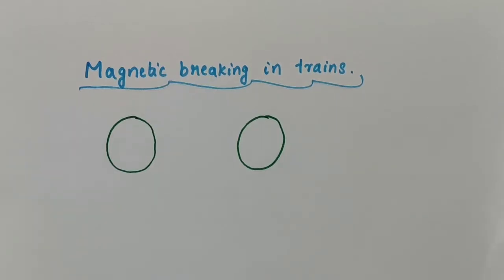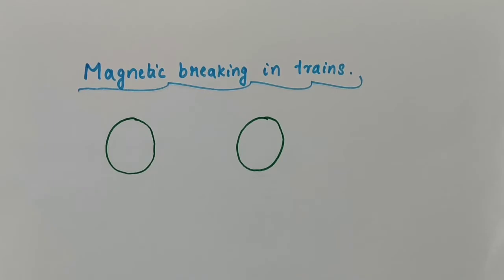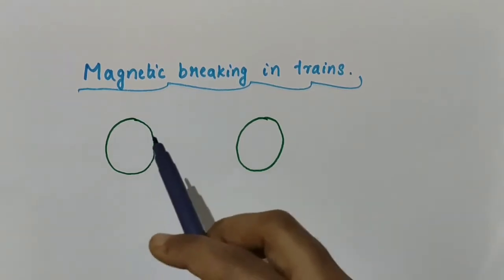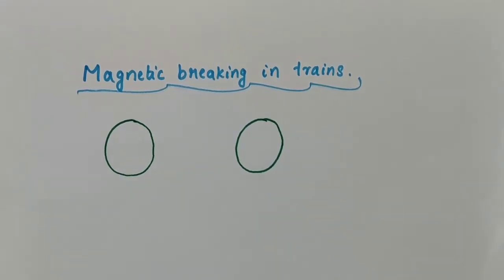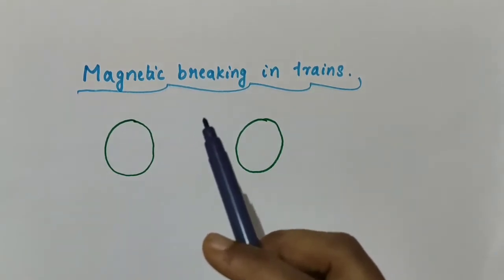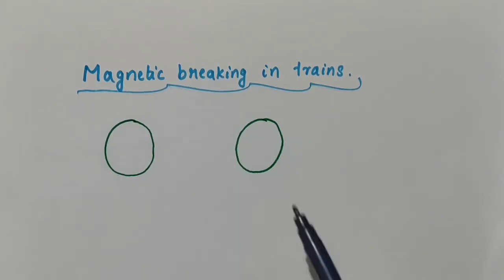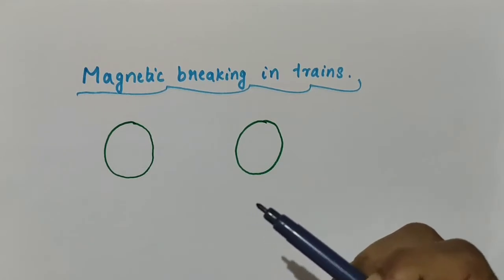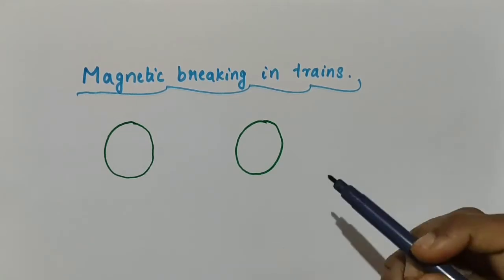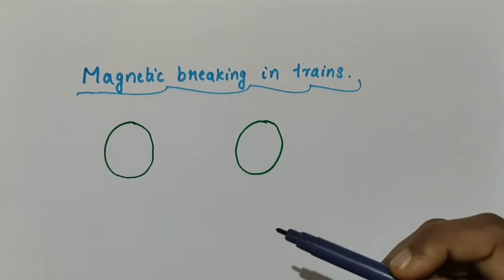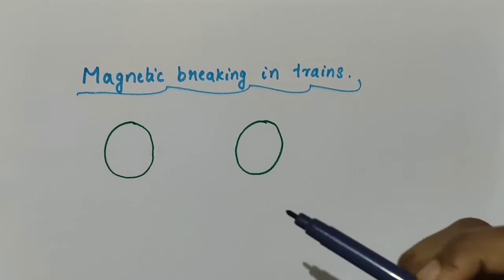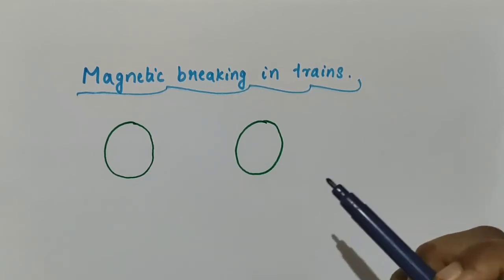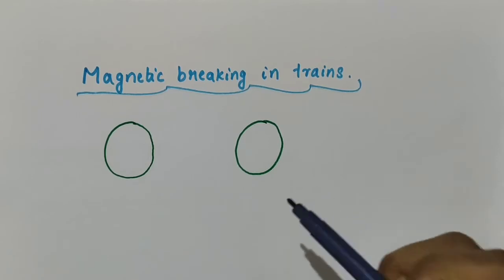In this video we are going to discuss one of the uses of eddy currents. Eddy currents are used to advantage in certain applications, and one such application is magnetic braking in trains. Strong electromagnets are situated above the rails in some electrically powered trains. When the electromagnets are activated, the metal wheels of the train get exposed to the magnetic field produced by the electromagnet.